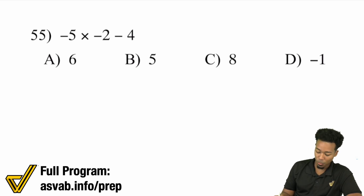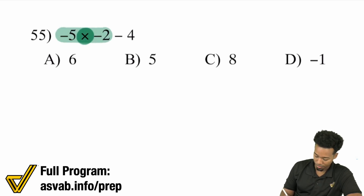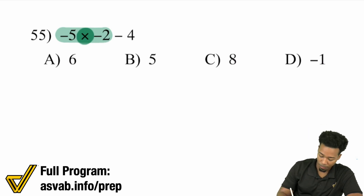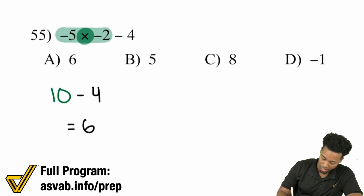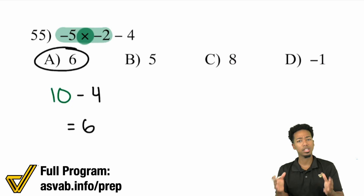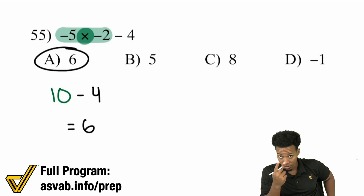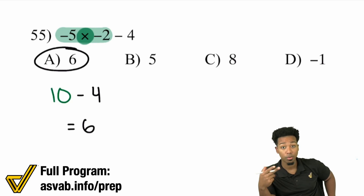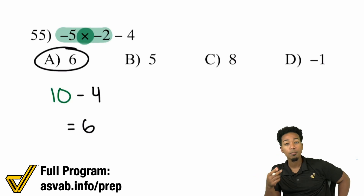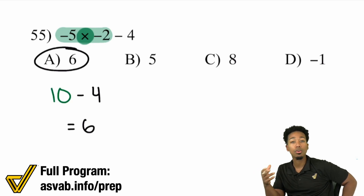Number 55 has a lot of negatives. We're going to take care of multiplication first — we have negative 5 times negative 2. A negative times a negative gives me a positive, and 5 times 2 is 10. So now this turns into 10 minus 4, and that equals 6. Notice what I'm constantly doing first: I'm analyzing first, seeing what the first thing to be done is, and then moving forward. Practice that — it's going to give you a really good opportunity to get this done the right way before you even start.